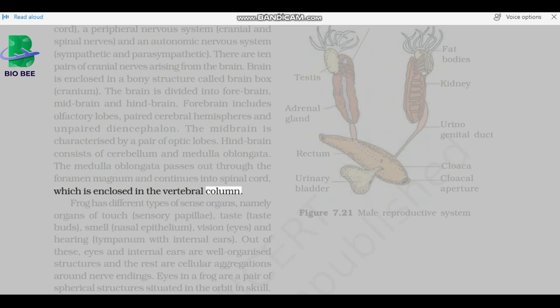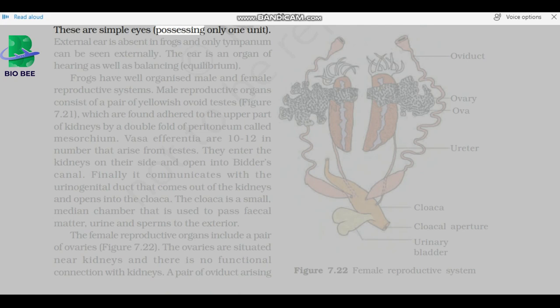Frog has different types of sense organs, namely organs of touch, sensory papillae, taste, taste buds, smell, nasal epithelium, vision, eyes, and hearing, tympanum with internal ears. Out of these, eyes and internal ears are well organized structures and the rest are cellular aggregations around nerve endings. Eyes in a frog are a pair of spherical structures situated in the orbit in skull. These are simple eyes, possessing only one unit. External ear is absent in frogs and only tympanum can be seen externally. The ear is an organ of hearing as well as balancing.